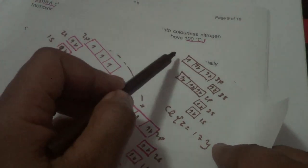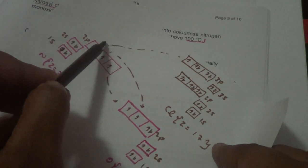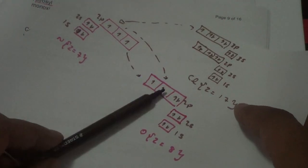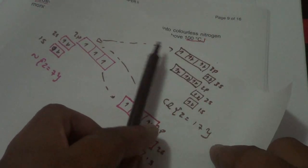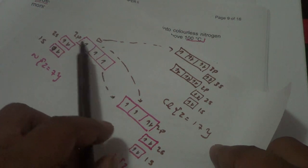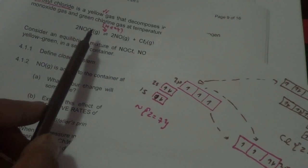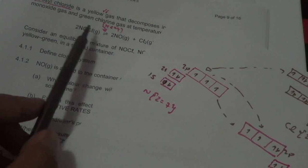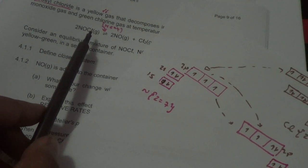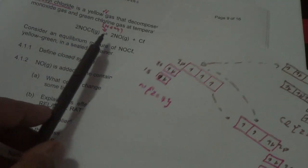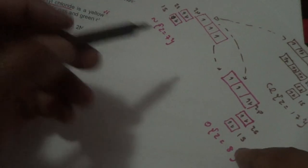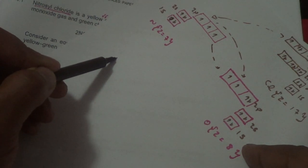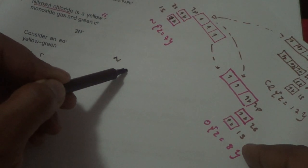We can tell that chlorine can share its electron with nitrogen, and nitrogen can do the same for whatever is missing. So we can see that covalent bonds are possible here — it's a covalent molecule. And then of course when we do a Lewis structure, we start with N and O.